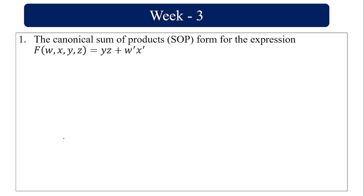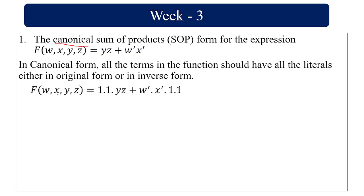The canonical sum of product form for the expression f(w, x, y, z) = yz + w̄x̄. The canonical form requires every term in the expression to have all the literals in one form or another. Here we have four literals w, x, y, z, but in the first term yz, w and x are missing, and in the second term w̄x̄, y and z are missing.